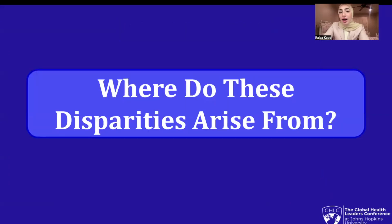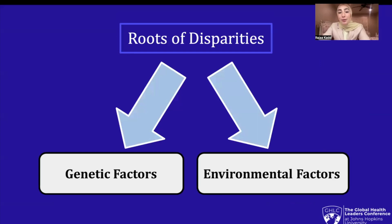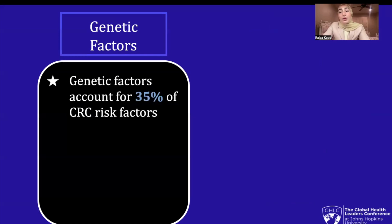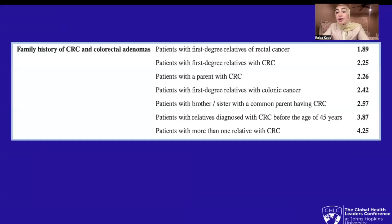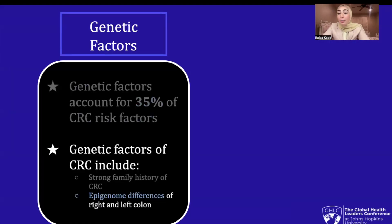Where do these disparities arise from? The roots of these disparities come from genetic and environmental factors. According to an article from the New England Journal of Medicine, genetic factors account for 35% of CRC risk factors. Genetic factors of CRC include strong family history of CRC, as shown in an article from the National Center of Biotechnology Information, demonstrating the relative risk of people to receive colorectal cancer — there is a very large relative risk for patients with more than one relative with CRC. Additionally, a Harvard Health publishing article stated that recent studies suggest differences in the epigenome of the right colon relative to the left colon among African Americans, compared with patterns seen among whites, could explain racial differences in the sites at which CRCs originate.